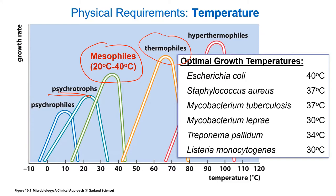Staphylococcus and Mycobacterium have optimal growth at 37 degrees. Mycobacterium leprae, which causes leprosy, has an optimal growth temperature of 30 degrees Celsius. Leprosy affects the extremities — fingertips, tip of the nose — because those areas are cooler than the body's core, matching its optimal growth temperature. Treponema pallidum, which causes syphilis, grows well at the genitals because they're slightly cooler than core body temperature, making it ideal as a sexually transmitted disease.